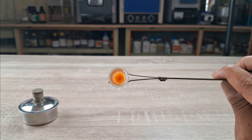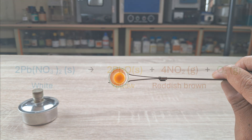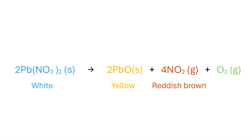Eventually, the release of the brown gas ceases, and what is left in the test tube is a yellowish-brown residue of lead monoxide. The chemical equation for the thermolytic decomposition of lead nitrate is as shown here.